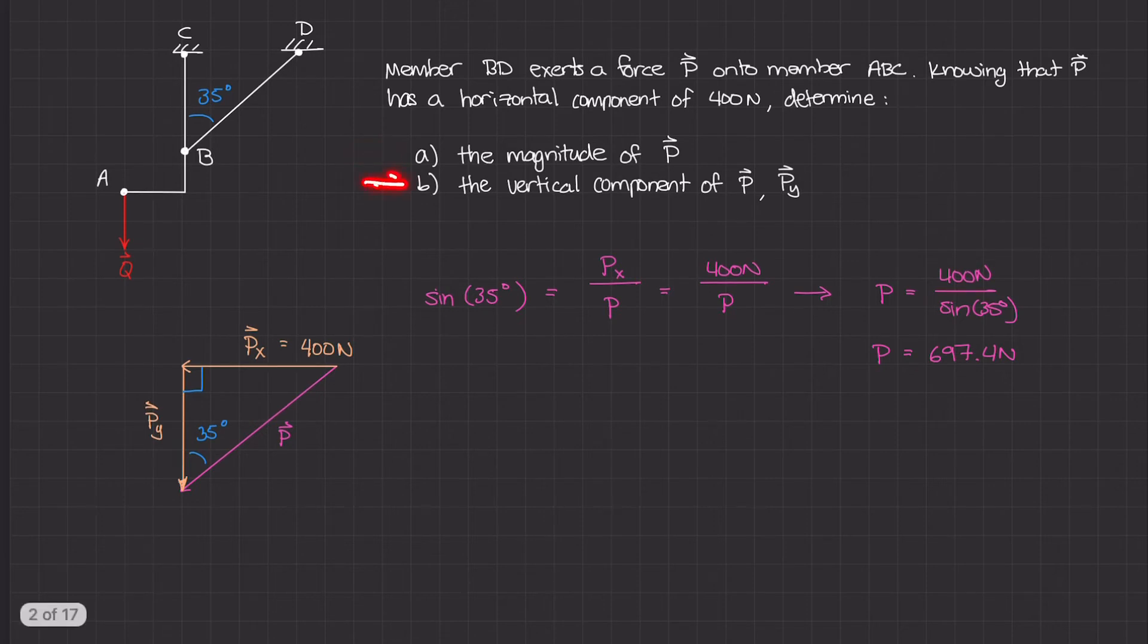Let's move on to part B, the vertical component P sub y. Back in our diagram, P sub y is this side of the triangle. We can use trigonometry to figure out what P sub y is. You can actually figure it out two different ways, and I'll show you both.